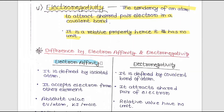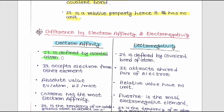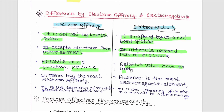The difference between electron affinity and electronegativity: electron affinity is defined for an isolated atom, while electronegativity is defined for an atom in a covalent bond. Electron affinity involves accepting an electron from another element, while electronegativity involves attracting the shared pair of electrons. Electron affinity has an absolute value in eV per atom, while electronegativity is a relative value with no unit. Notably, chlorine has the highest electron affinity while fluorine is the most electronegative element.